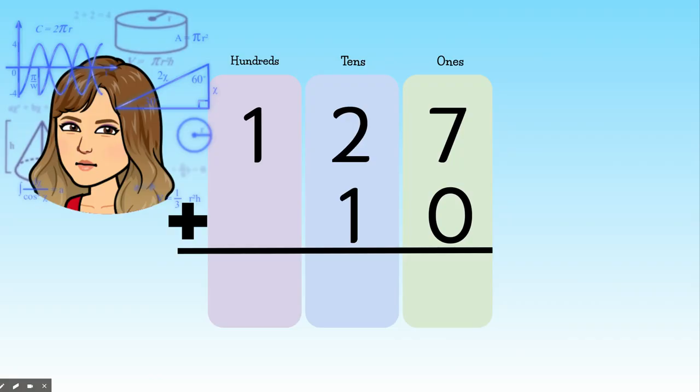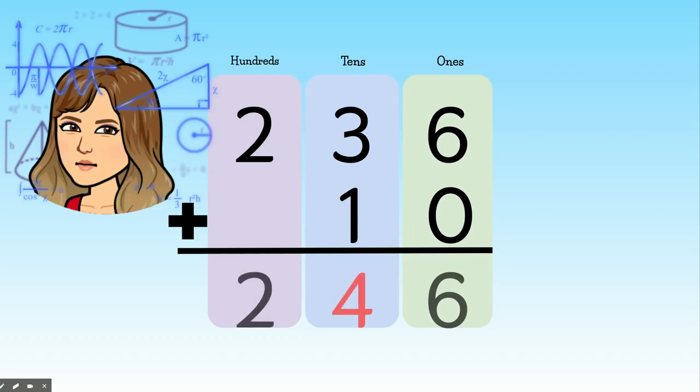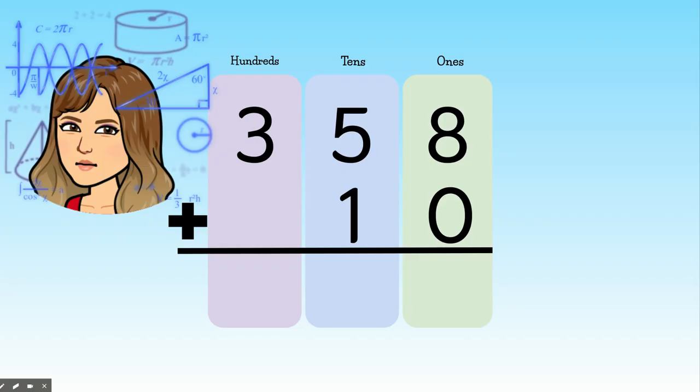Let's practice. Go ahead and unmute and yell out the answer to the problem. 127 plus 10 is 137. 236 plus 10 is 246. 358 plus 10, 368.